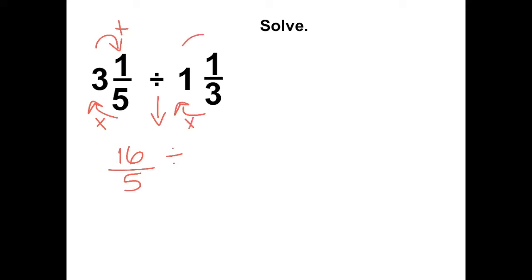3 times 1 is 3, plus 1 more is 4. Keep the denominator the same. Now that we have two improper fractions.